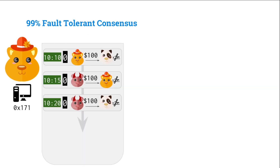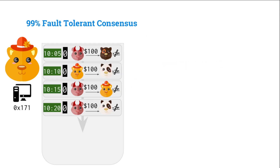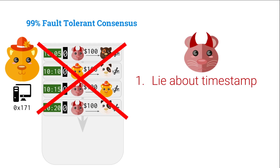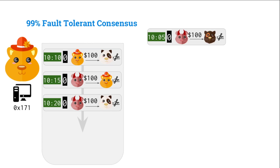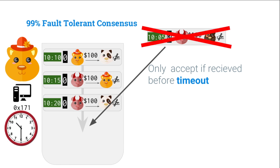Here we have our list of transactions just like before. In our current broken protocol, we always accept transactions. But that means Mallory can just lie about the timestamp. Instead, what we have to do is only accept transactions if they're received before a timeout. Otherwise, they're rejected. This way we don't allow Mallory to do that lying-about-timestamp attack.